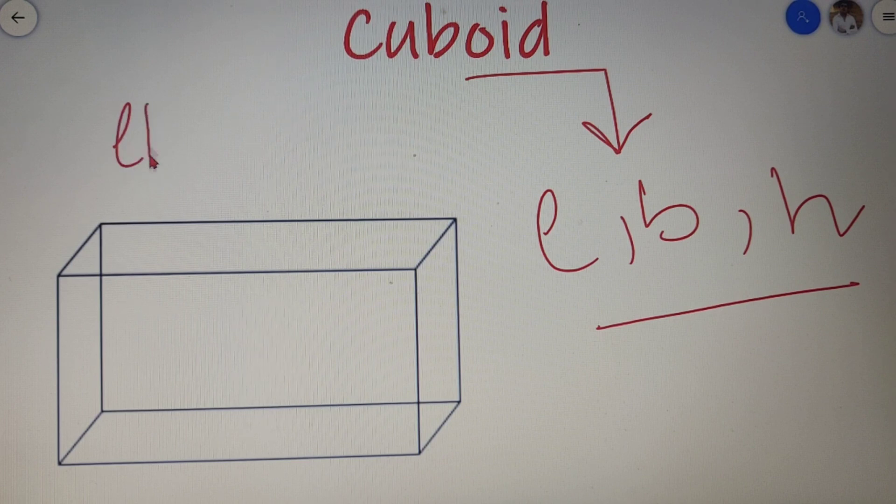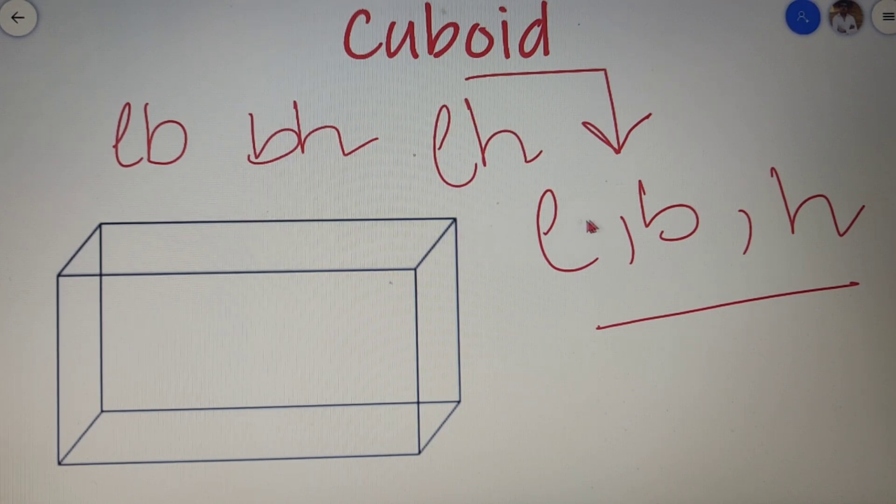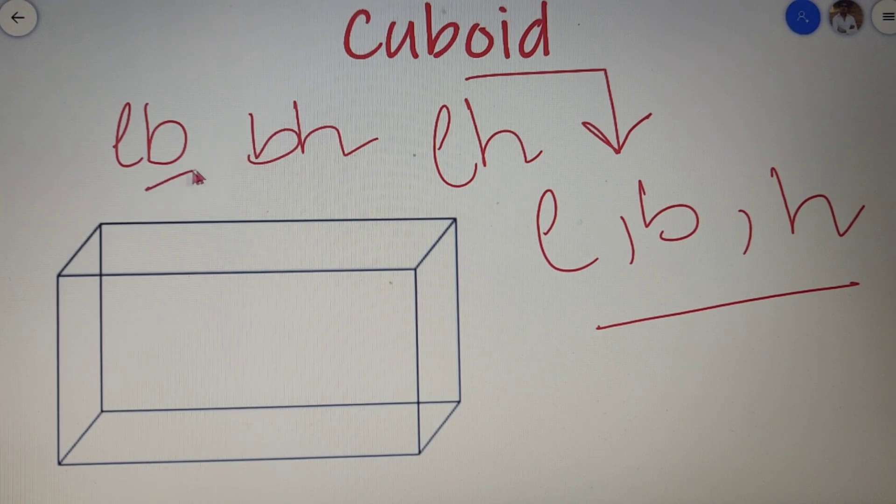So for a cuboid either L and B are equal and H is different, B and H are equal and L is different, or L and H are equal and B is different. Remember that this is not a necessary condition for a cuboid. All the three sides of a cuboid can also be different and if the sides are equal then it can be up to only two sides.